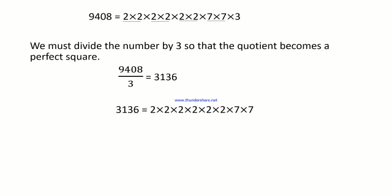The prime factorization of 3136 is 2 × 2 × 2 × 2 × 2 × 2 × 7 × 7. Here, 3 is not present and each prime factor occurs in pairs. The square root of 3136 is equal to 2 × 2 × 2 × 7. Taking one factor from each pair and multiplying: 2 × 2 × 2 × 7 = 56. So, the square root of 3136 is 56.